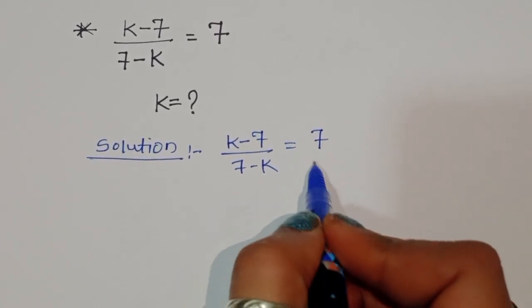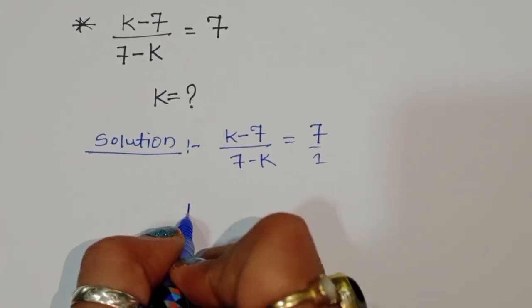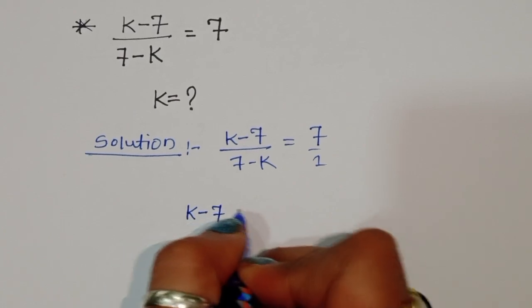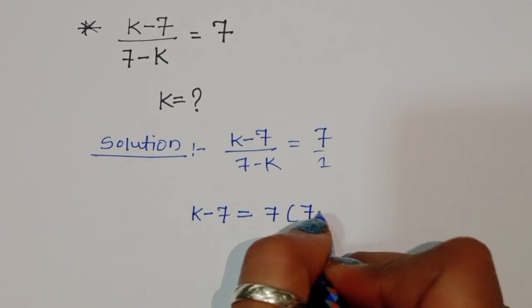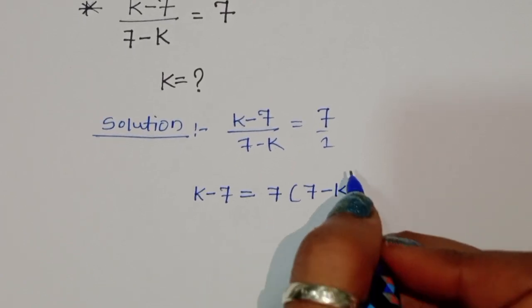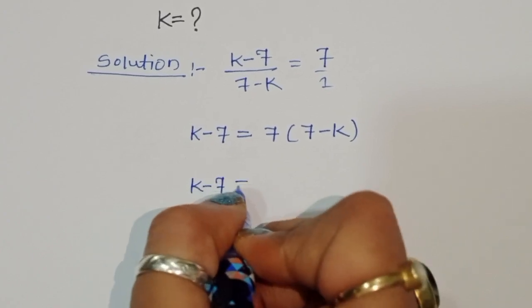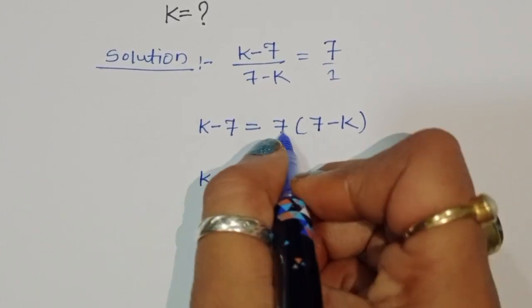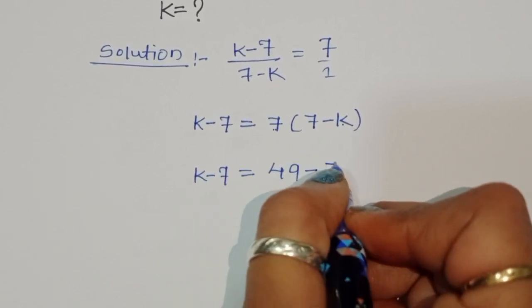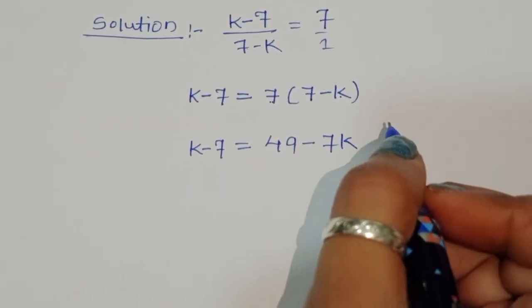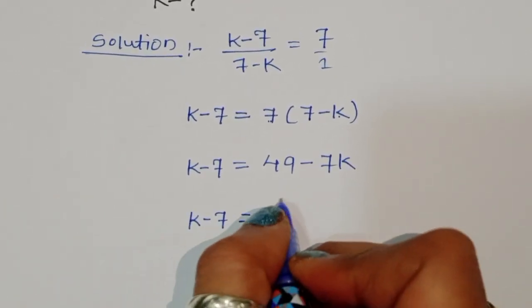We can do cross multiplication here. So doing cross multiplication, we get k minus 7 is equal to 7 times (7 minus k), which gives us k minus 7 equals 49 minus 7k.